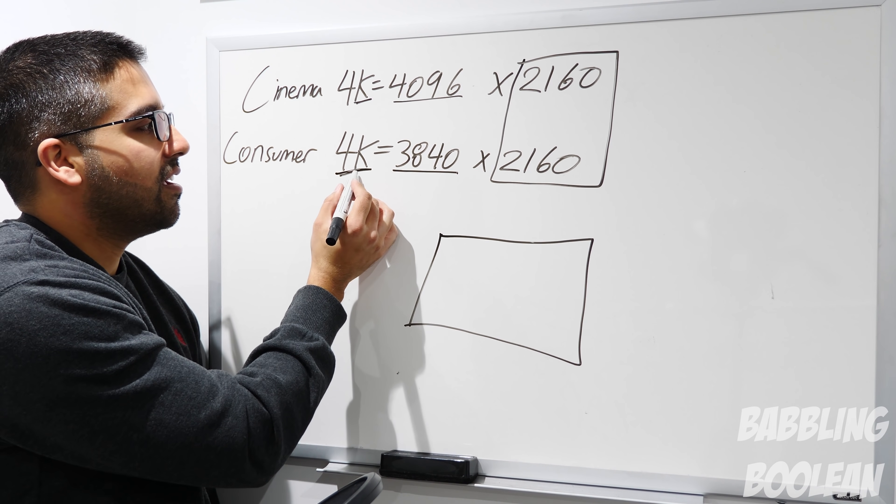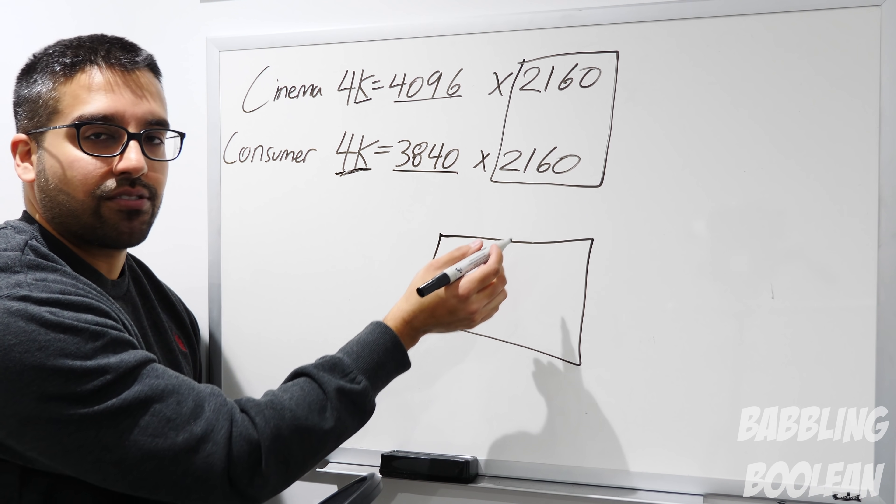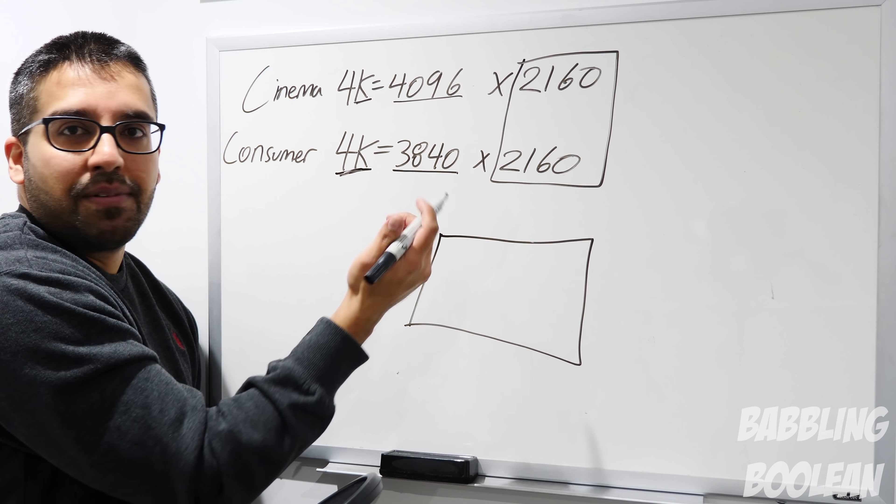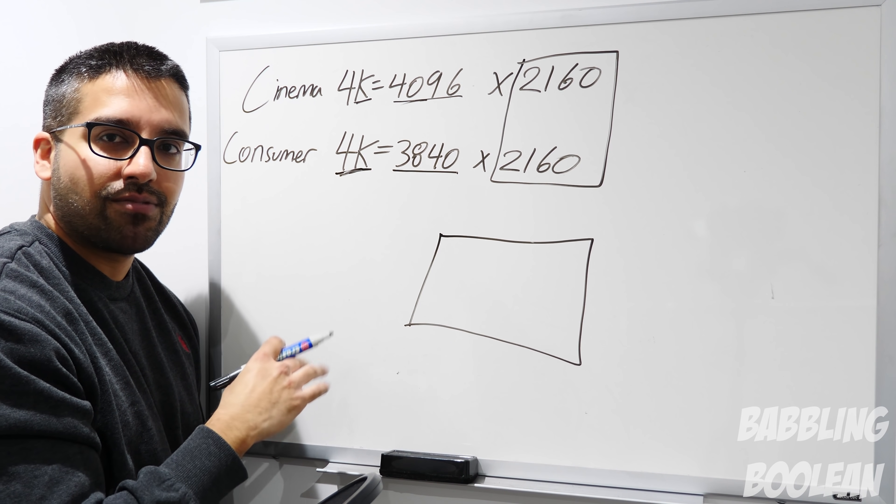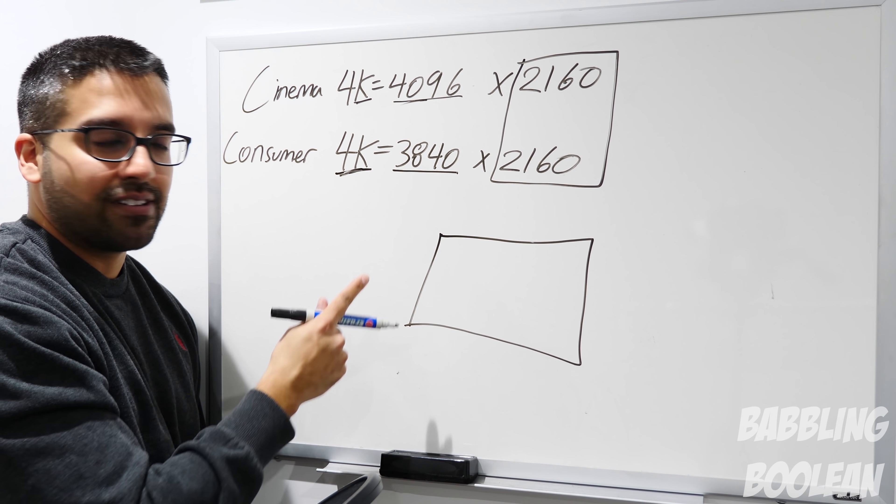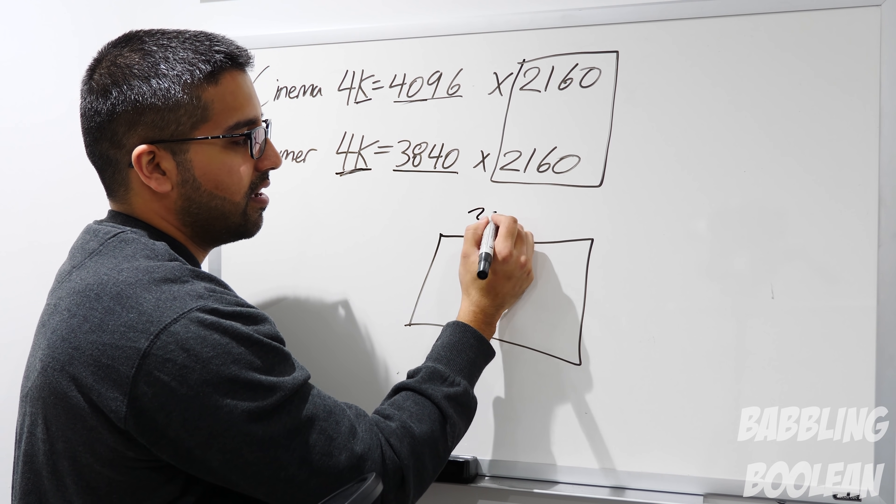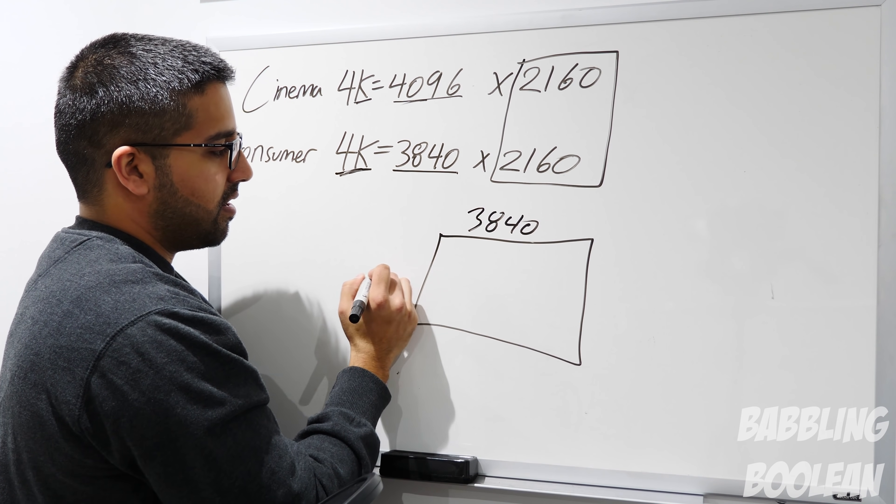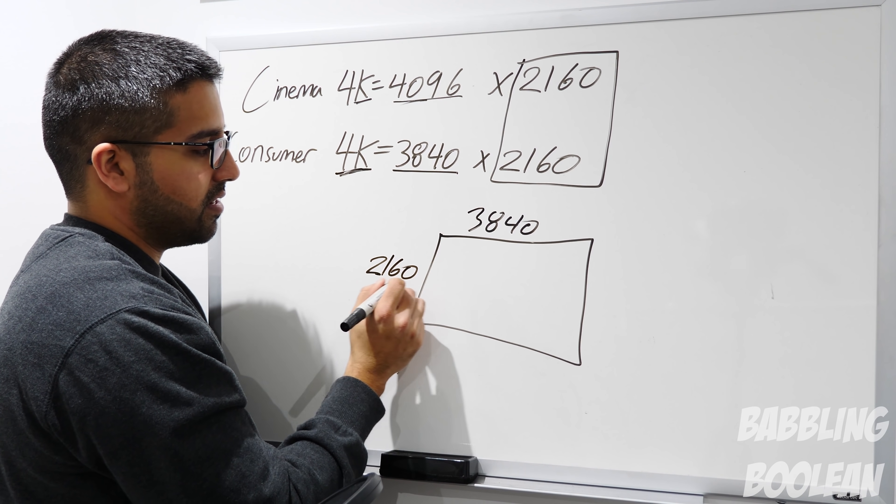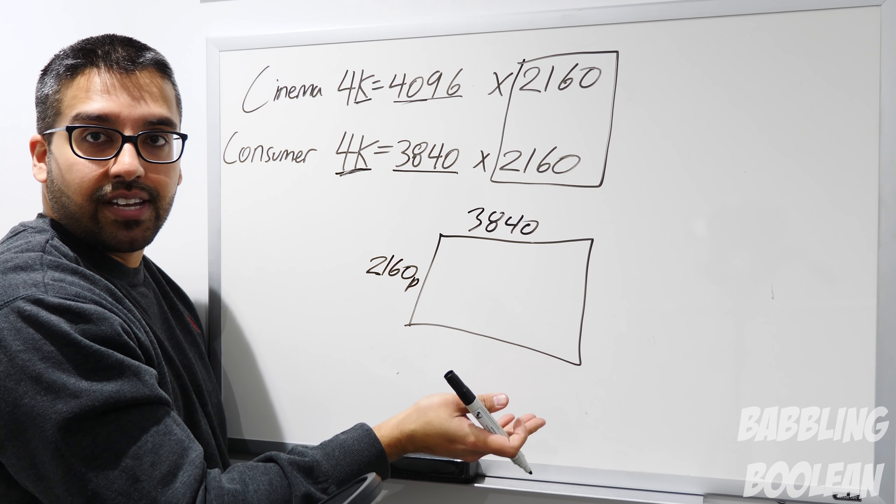They're not really lying. No one actually said, hey, 4K means you have 4000 pixels across. It's just a name, it's just a naming convention, and we based it on this. So no one's actually lying, but that's what it means. So again, for 4K TVs, it's 3840 by 2160, which you get 2160p. That's the standard for 4K.